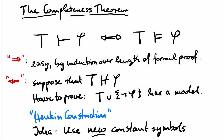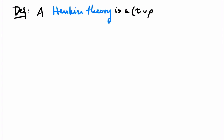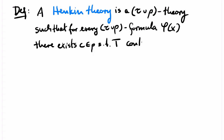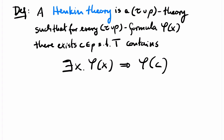The idea is to add new constant symbols — by 'new' I mean that these constant symbols are not in the signature of T and φ. A Henkin theory is a τ∪ρ-theory such that for every τ∪ρ-formula φ with free variable x, there exists a constant c in ρ such that the theory T contains the sentence: if there exists an x such that φ(x), then φ(c). The constants from ρ will then be called the Henkin constants of T.